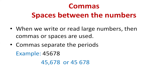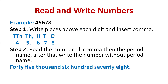Now we are going to learn about reading and writing big numbers — specifically five-digit numbers. You just need to remember two steps. Take the example 4, 5, 6, 7, 8. The first step is: write the places above each digit. So above eight, write ones; above seven, write tens; above six, write hundreds; above five, write thousands; and above four, write ten thousands. This is how you write the places above the digits.